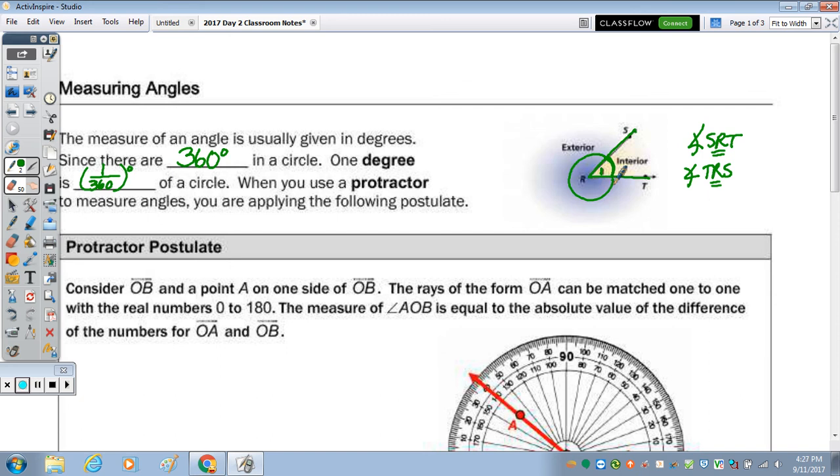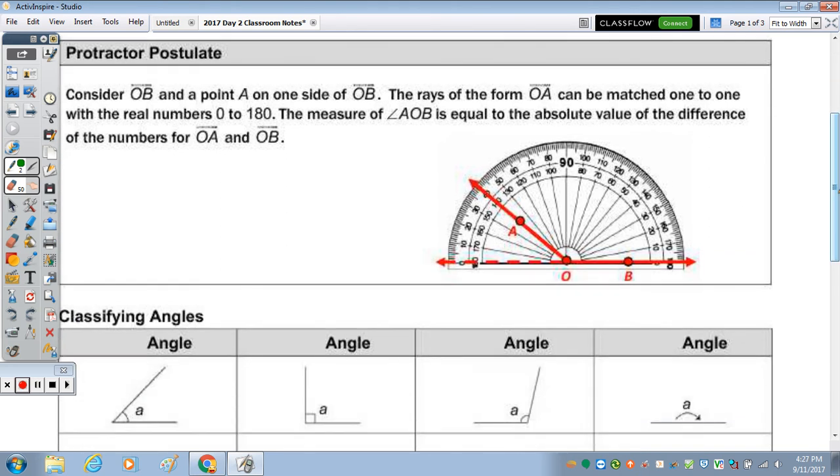So down below, within the box for the protractor postulate, it says consider line OB and point A on one side of that line. The rays of OA can be matched one to one with real numbers zero to 180. The measure of angle AOB is equal to the absolute value of the difference of the numbers for OA, or for ray, the numbers for ray OA and OB. So here we have line OB, but we're not going to look at the line. We're going to look at one of the opposite rays that forms that line. So OB.